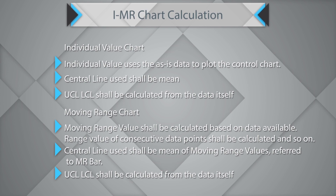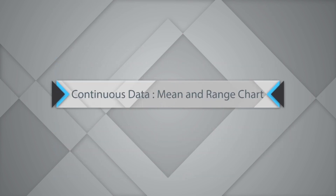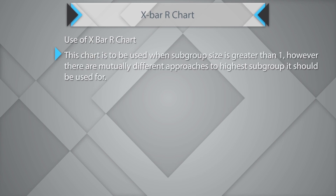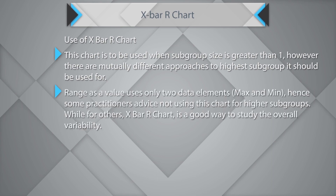The IMR chart is to be used when you are looking at single subgroup data. The next chart is the mean and range chart, or the X-bar R chart. This chart is used when you have subgroup size greater than 1. However, there are differing approaches regarding the highest subgroup size it should be used for. Range as a value uses only two data elements — maximum and minimum — so some practitioners advise not using this chart for higher subgroups. If you had nine subgroups, the X-bar R chart for range calculation would use only two, meaning seven other subgroups would be overlooked.